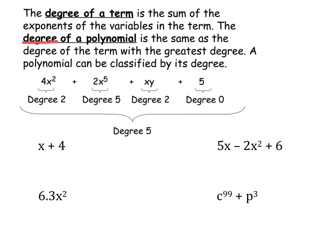I like to start by finding the degree of each term in the polynomial. Here I have 4x squared plus 2x to the fifth plus xy plus 5. The degree of the first term is 2 because it has one variable to the power of 2. The second term is degree 5 because it has one variable and its exponent is 5. The next term is xy — it has two variables, x is to the power of 1 and y is to the power of 1, so the sum of those exponents is 2, making that degree 2.